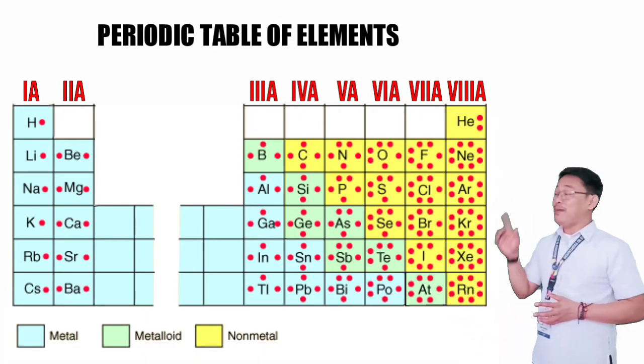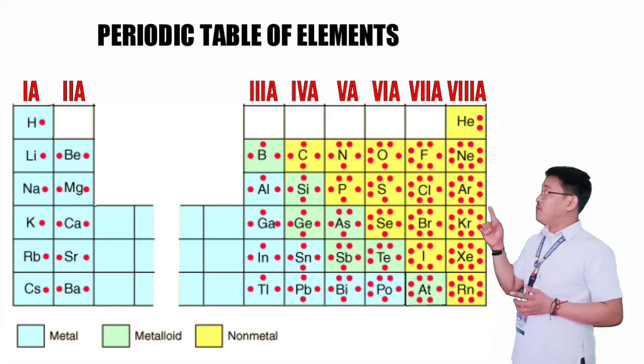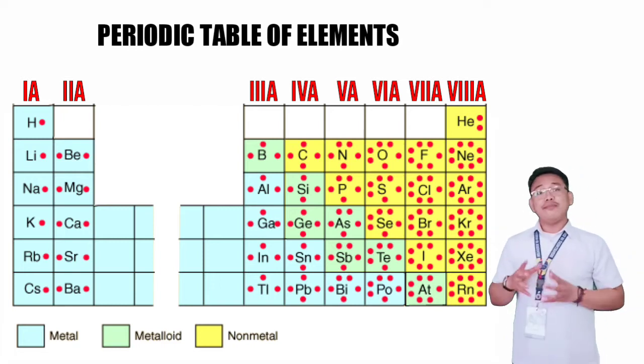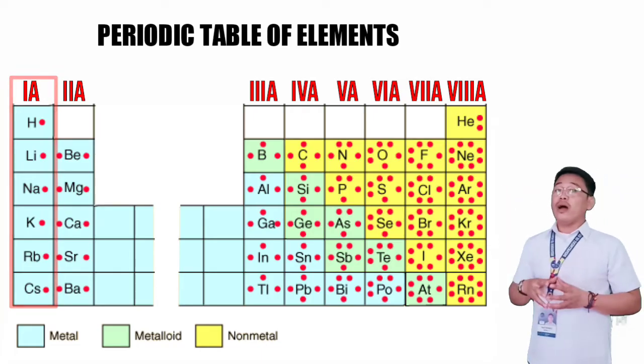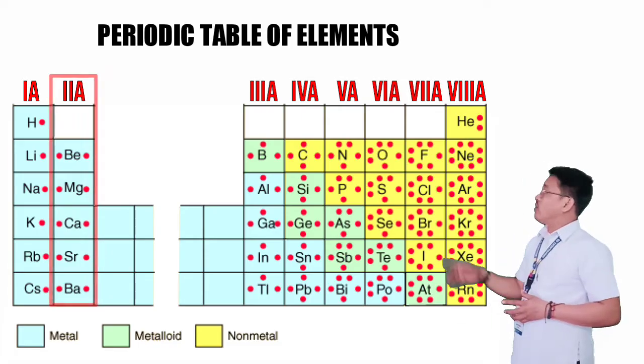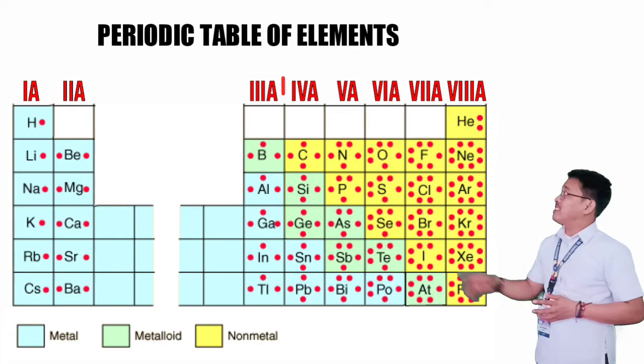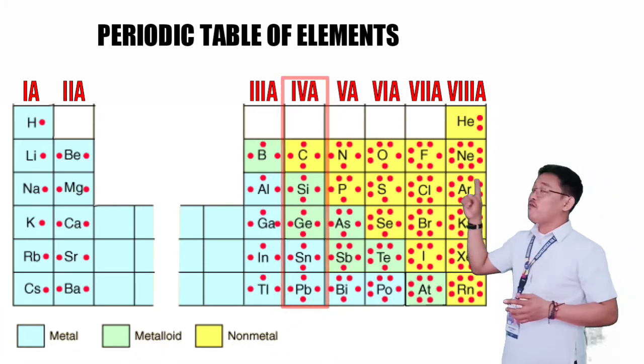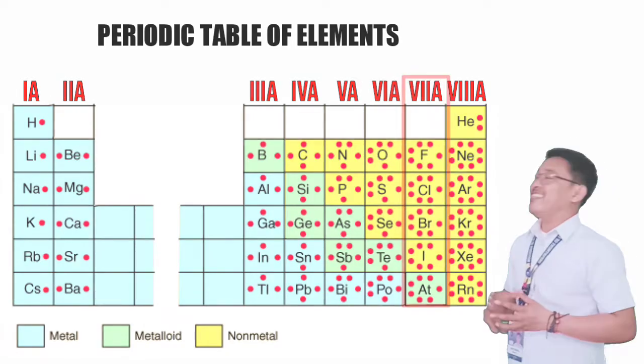Whichever family they belong to, that's also their number of valence electrons and their Lewis dot structure. This means that each element in family 1A has one valence electron, family 2A with two valence electrons, family 3A with three valence electrons, family 4A with four valence electrons, 5A, 6A, and so on.